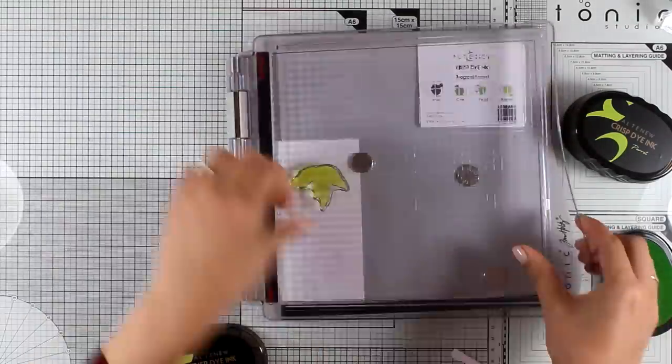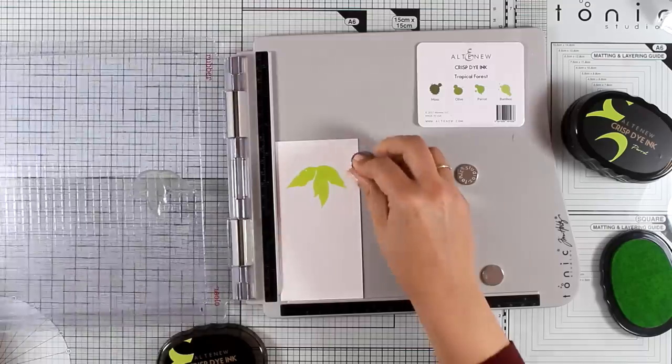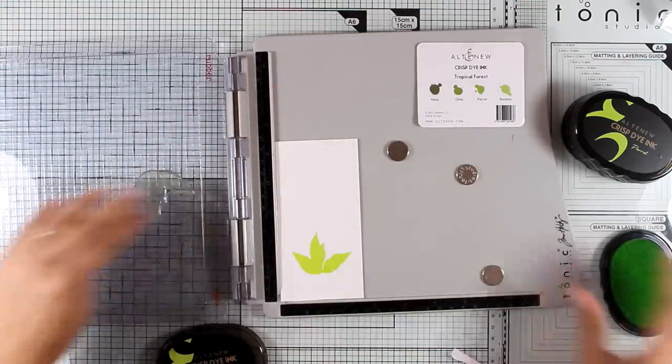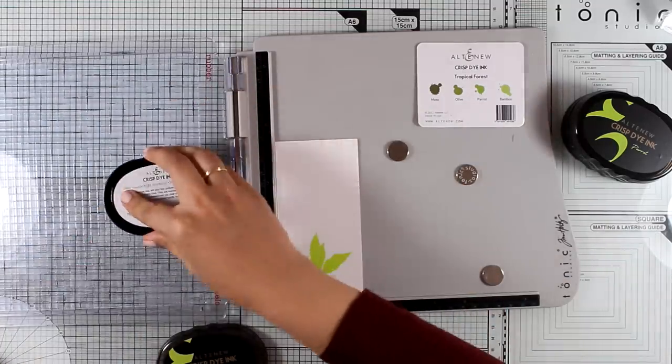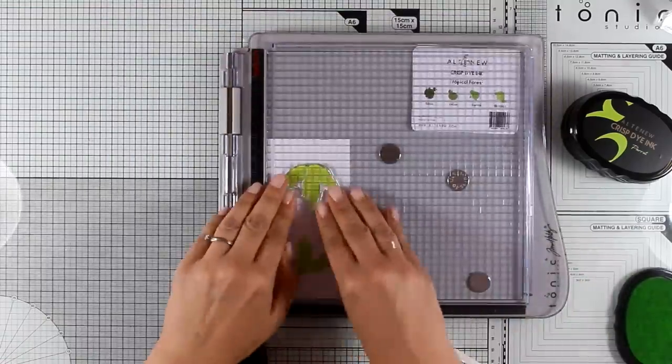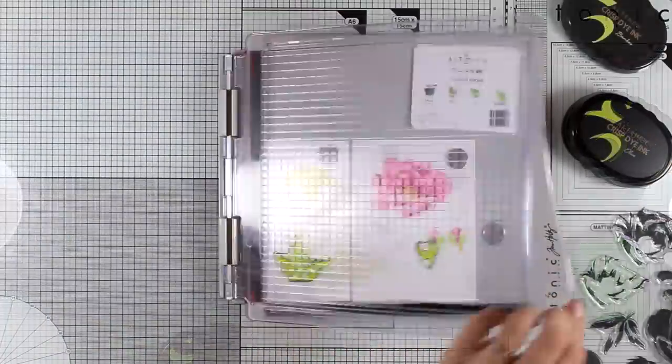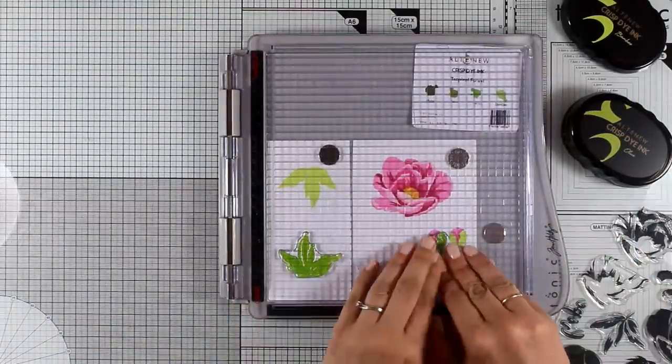In the stamp set there is also one leaf that consists actually of three different layers. For that I'm going to stamp with ink pads from the oval set that's called Tropical Forest. And I'm actually starting with Bamboo. The second layer will be Parrot and the third layer is Olive.